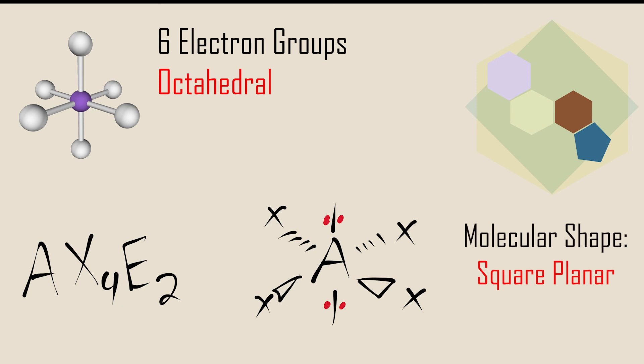When a molecule has two lone pairs and four bonding groups, the lone pairs always lie at opposite vertices to avoid 90-degree lone pair-lone pair repulsions. This positioning gives a square planar shape.